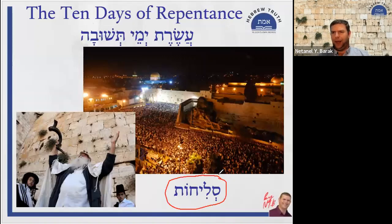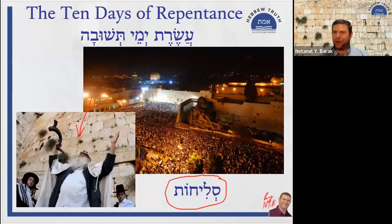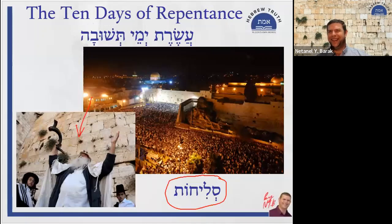Many people go to the Western Wall to say these Selichot prayers, starting already a month before Rosh Hashanah and continuing during the ten days of repentance. There's a well-known figure at the Western Wall who blesses people with rhymes — very funny. If you visit Israel and see him, ask him to bless you. He is very much part of the scene of the Western Wall.